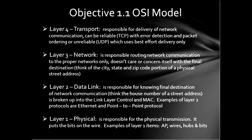The physical layer is responsible for taking the frames from layer two and breaking them into bits — that's the signal that goes down the wire. There's also hardware that works at layer one, and the best example of that is a hub. A hub is a layer one device. A switch, in contrast, is a layer two device, and I will talk about that a little bit more later.